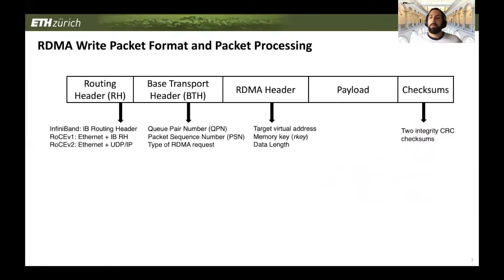Considering the RDMA packet format: first, we have the routing header, which is similar to an IP header and contains information about how the packet traverses the network. Then we have the base transport header, similar to a TCP header, which contains endpoint information to assign a packet to a connection and to an allocated buffer. Then we have the RDMA header, which contains the target address, a memory key as an access control token, and other information. Finally, we have two integrity checksums.